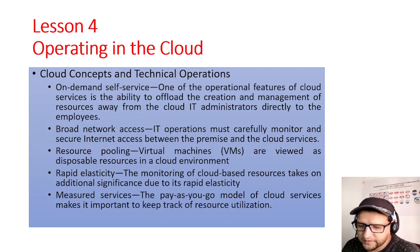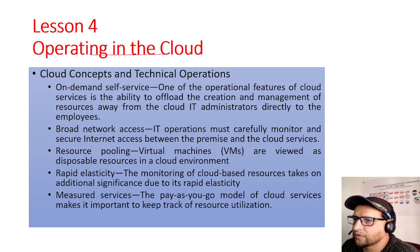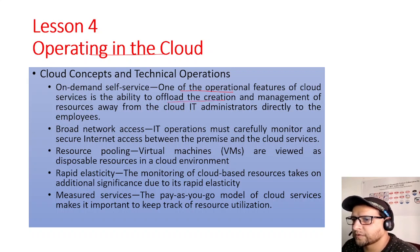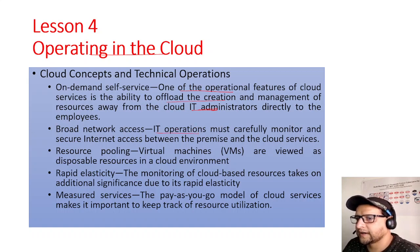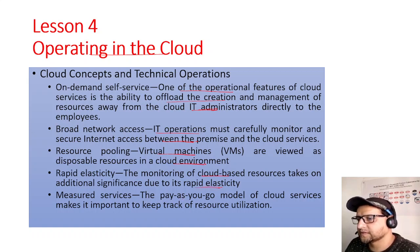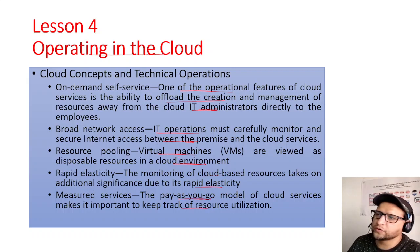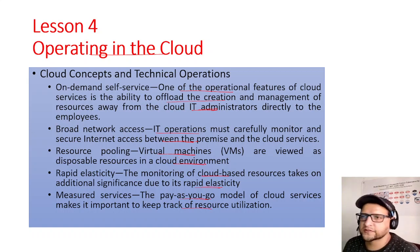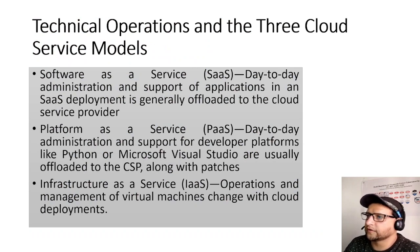Lesson 4 — Operating in the Cloud. Connecting NIST characteristics to operations: On-demand self-service allows offloading resource creation directly to employees. Broad network access means IT operations must carefully monitor and secure internet access between premises and cloud services. Resource pooling means VMs are viewed as disposable resources in a cloud environment. Rapid velocity means monitoring takes on additional significance due to elasticity. Pay-as-you-go makes it important to track usage carefully — these characteristics present operational challenges.